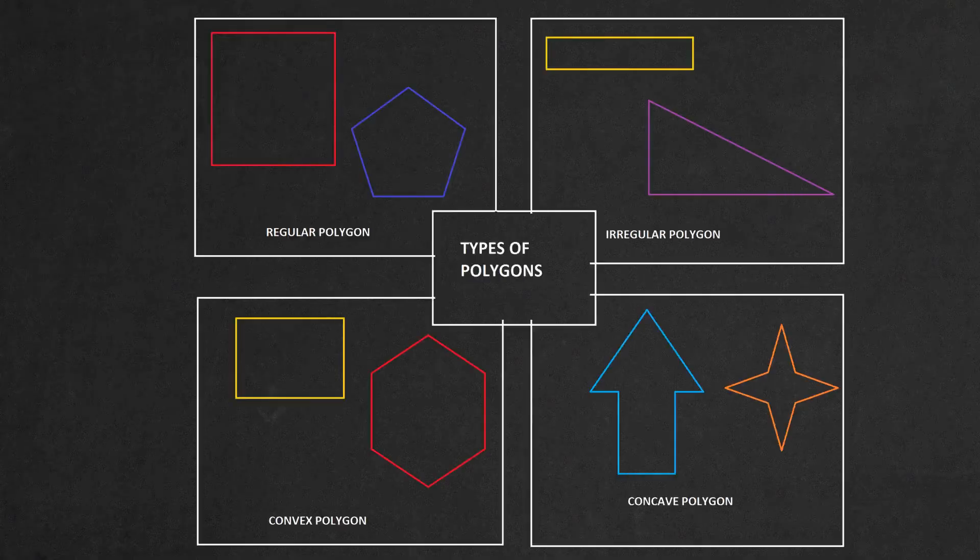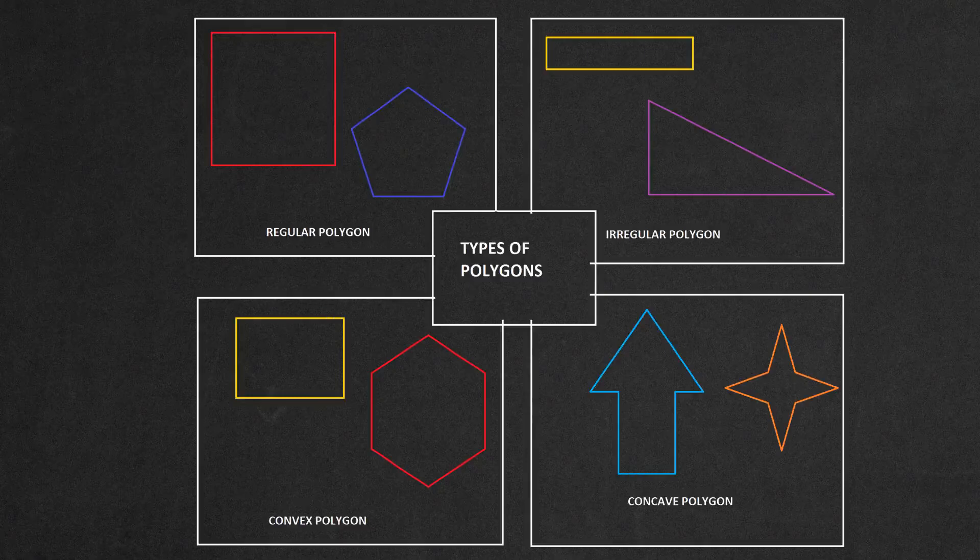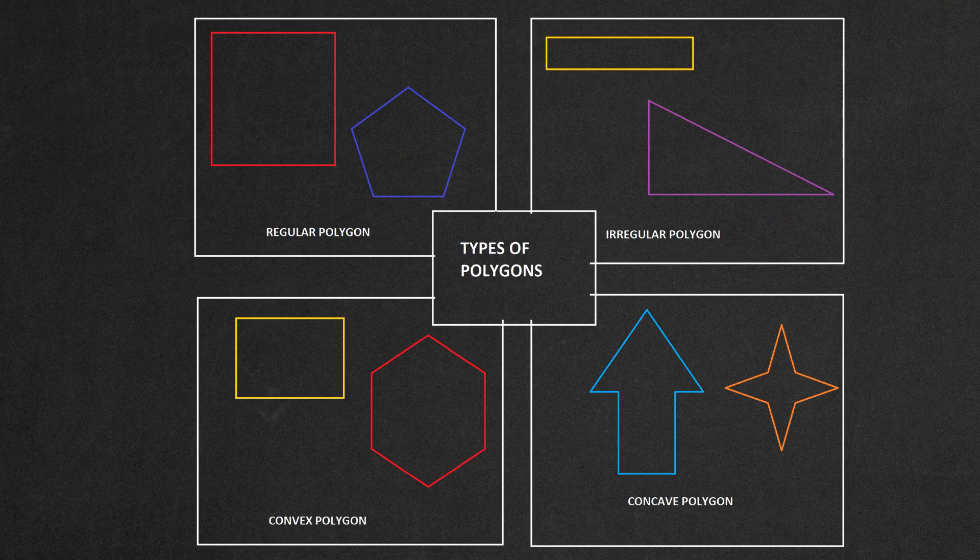Polygons actually appear all around us. They can either be regular or irregular and can be convex or concave. So, let's learn a little more about them.